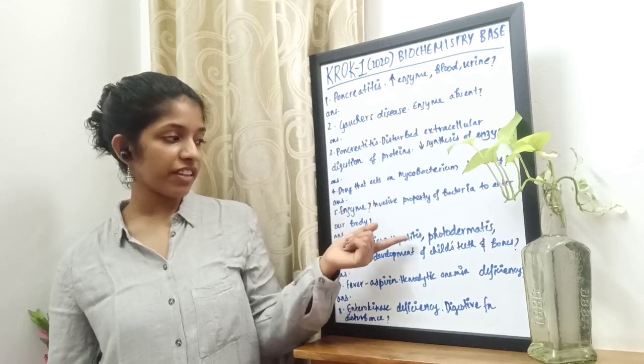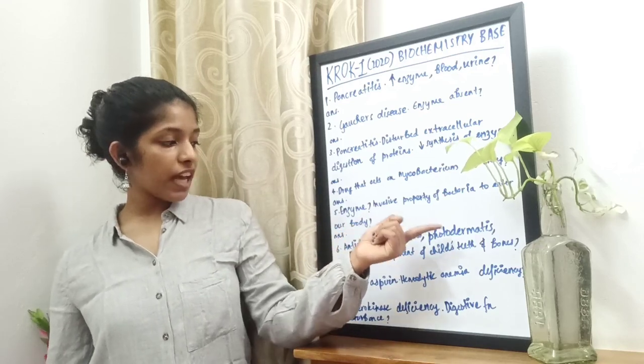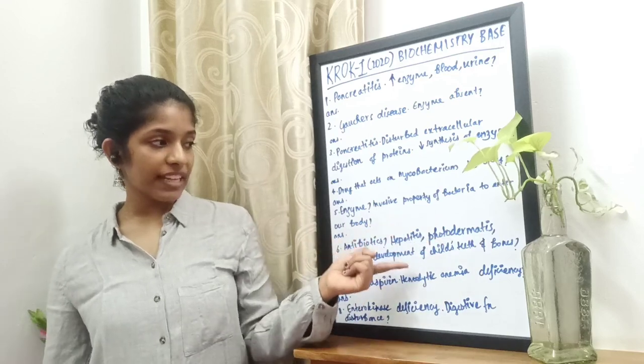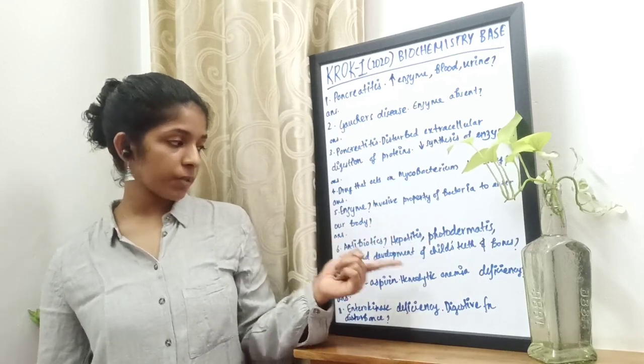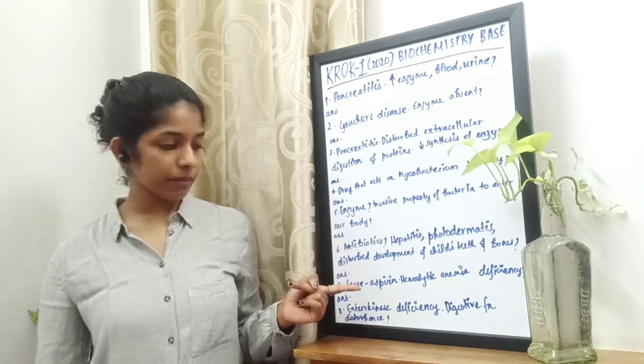The next question: the group of antibiotics that has the side effects of hepatitis, photodermatitis, and disturbed development of a child's teeth and bones. The answer is tetracycline.